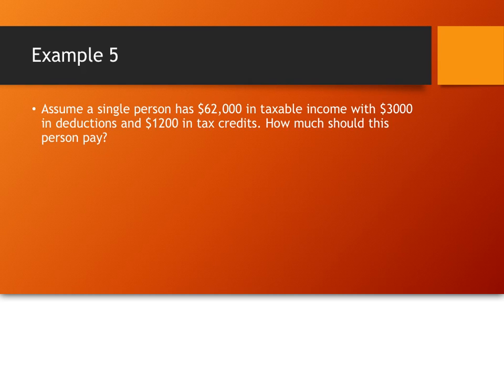Alright, so hopefully you've done this. Now, starting off, before we get anywhere else, the first thing we have to do is take care of our deductions. So, the government is going to, instead of assuming we made $62,000, well, it's going to take this deduction of $3,000 and make that $59,000.